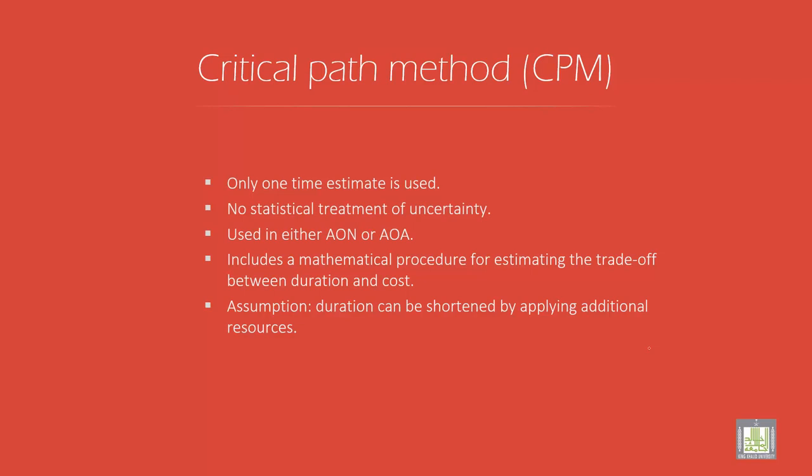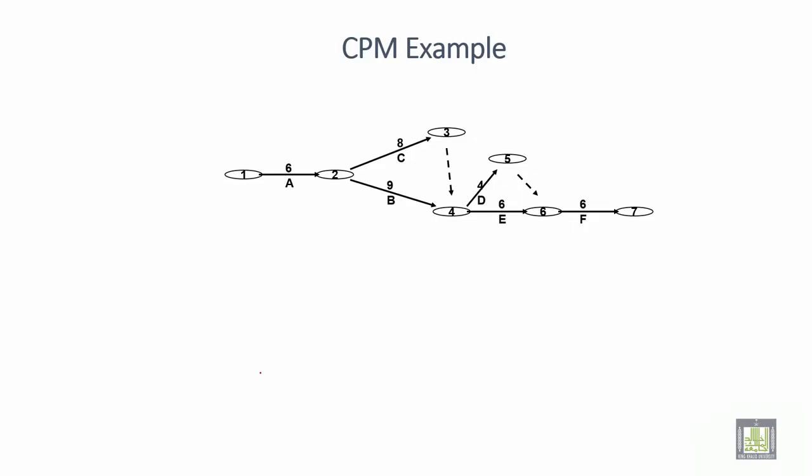Then Critical Path Method CPM. CPM actually uses only one time estimate, and there is no statistical treatment used. It uses either AOA or AON. It includes mathematical procedures. Also, the duration can be shortened by applying additional resources. There is an example in the next slide. It will be more clear if you see that example. I will show you the example.